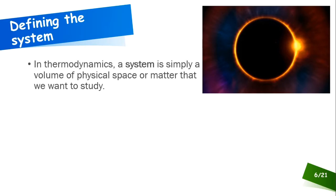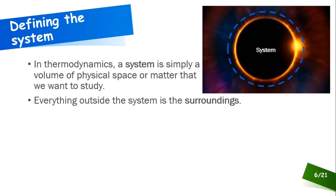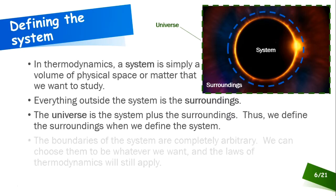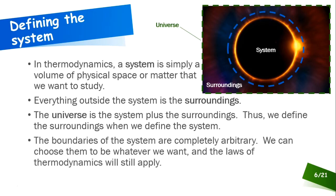Going back to an earlier example from mechanics — with a moon-sun combination defined as our system — the surroundings is everything outside the system. The universe is the system plus the surroundings. By defining the system, we've necessarily also defined the surroundings, and the boundaries we choose are completely arbitrary.